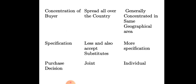The next point is specification. For consumers, specification is less important and they can also accept substitutes. For example, instead of tea, they can buy coffee powder. But when it comes to the organizational buyer, they need more specification, because out of these materials they are producing another product. To produce whatever the intended product is, they need good specifications. So in consumer behavior, specification is given less importance, but in organizational or buyer behavior, it is given more importance.